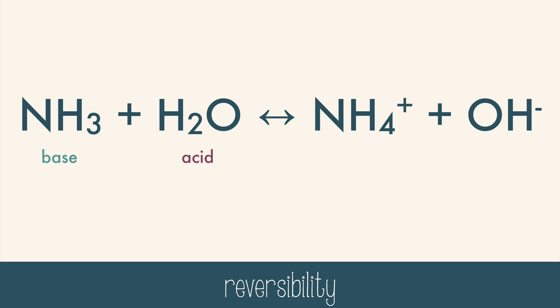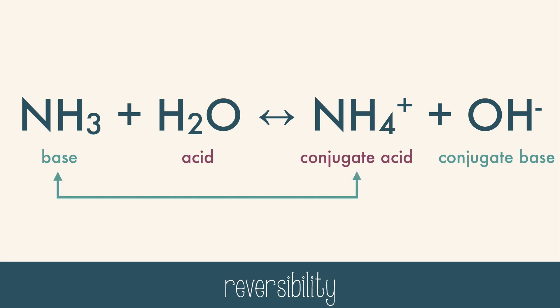But when we look at the other side of the equation, we could imagine it going in the opposite direction, where ammonium ion would donate the proton and hydroxide would accept. We call these the conjugate acid and the conjugate base. A conjugate acid is the particle that's formed when a base gains a hydrogen ion, and a conjugate base is the particle that remains when an acid has donated a hydrogen ion. They will always be paired like this because it's a reversible reaction.